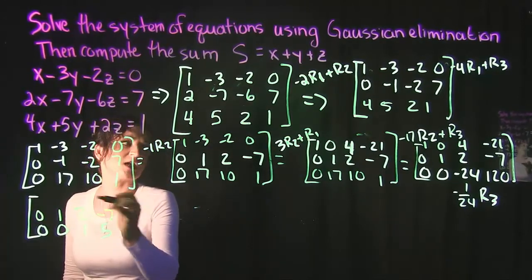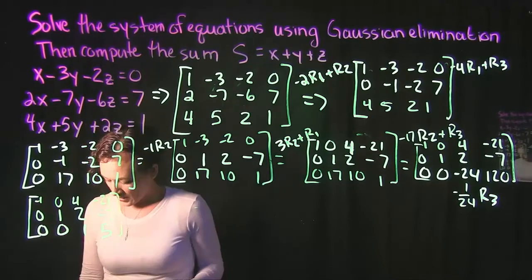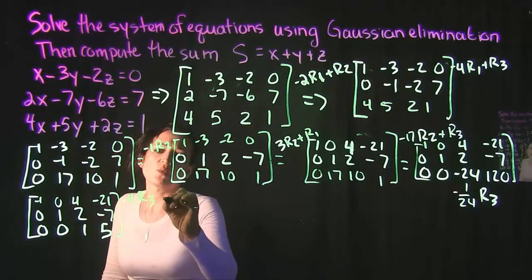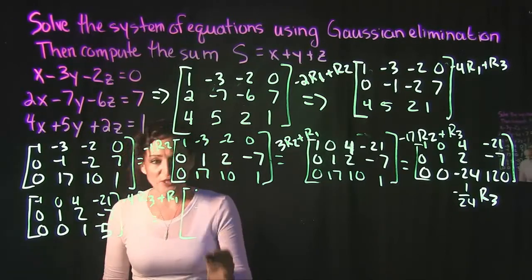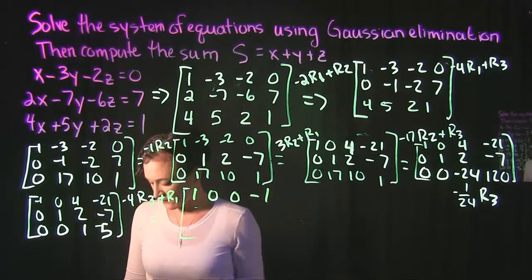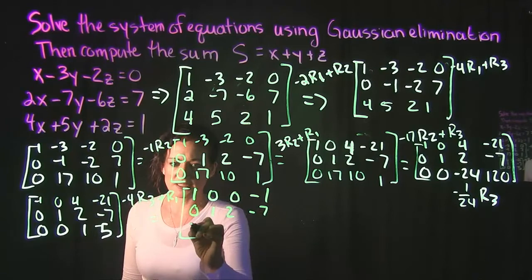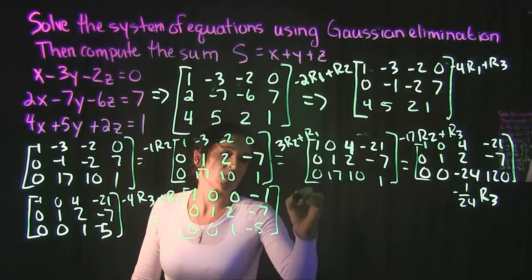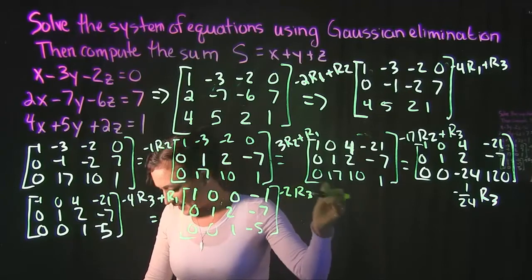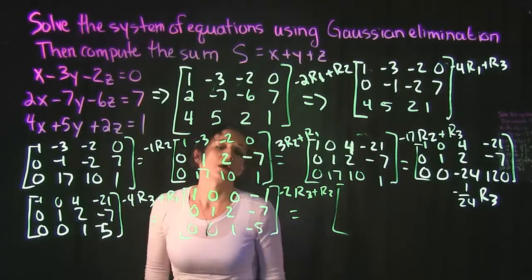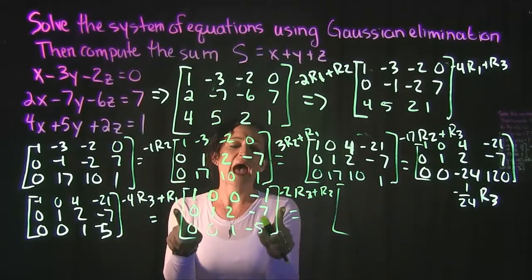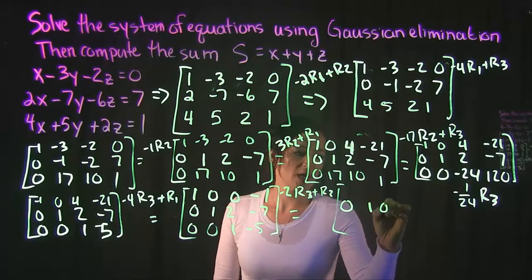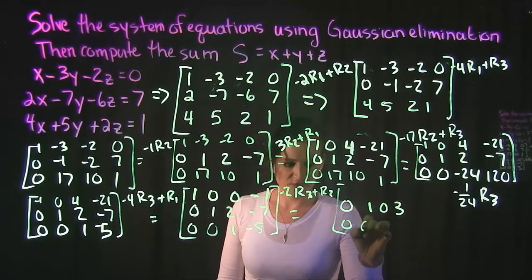Everything else stays the same. We're almost there. Next step: take row 3, multiply it by negative 4, and add that to row 1 — which gives us 1, 0, 0, -1 for our first row. Everything else stays the same. Then take row 3, multiply it by negative 2, and add that to row 2 — which gives us 0, 1, 0, 3 for row 2.